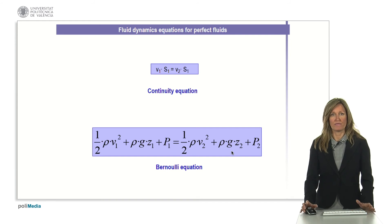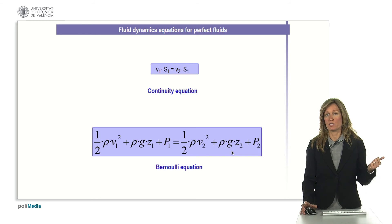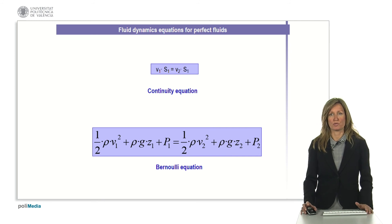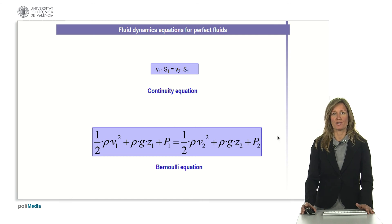Let me sum up before we finish. When we are working with perfect fluids, meaning they are incompressible and we are not considering the effects of viscosity, we have two fundamental equations, the one coming from the conservation of mass, which is the continuity equation, and the one coming from conservation of energy, which is the Bernoulli equation. Thank you.